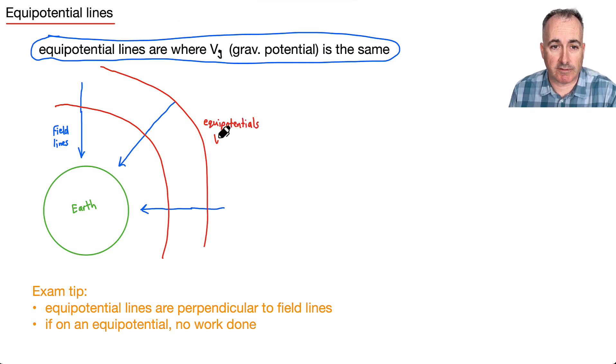So these are here going to be my equipotentials. Now what does that mean? That means the Vg, in other words the gravitational potential, is the same. So that means if you're somewhere right along this one right here, for example, I mean I'm trying to draw a circle, I'm just bad at drawing circles. But these right here, for example, if you walk along this right here, you haven't changed any gravitational potential. Therefore you've done no work. So that's the important thing right here.